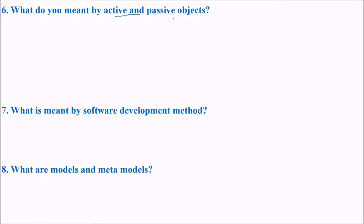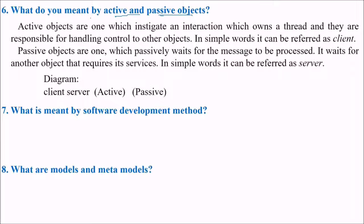What do you mean by active and passive objects? Active objects are one which instigate an interaction which owns a thread and they are responsible for handling or controlling other objects. In simple words it can be referred to as the client. Passive objects are one which passively waits for the message to be processed. It waits for another object that requires its services. In simple words this can be referred to as a server.